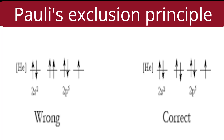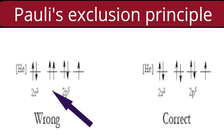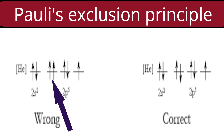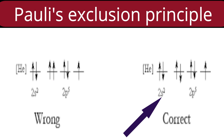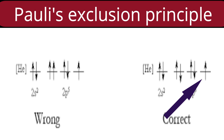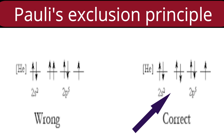Here the electronic configuration of fluorine is represented showing only the second shell. The 2s orbital has 2 electrons, properly represented on the left side. In the first 2p orbital shown, both electrons have the same spin — this is not allowed, it is wrong. In the second electronic configuration shown, 2s² has both paired, and in the 2p orbitals electrons are properly arranged with 2px paired, 2py paired, and 2pz with one unpaired electron. The second electronic configuration for fluorine is correct, based on Pauli's exclusion principle.